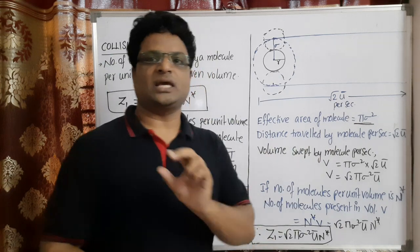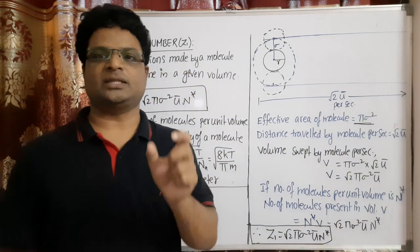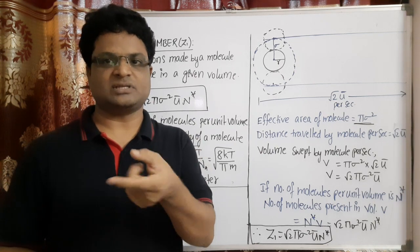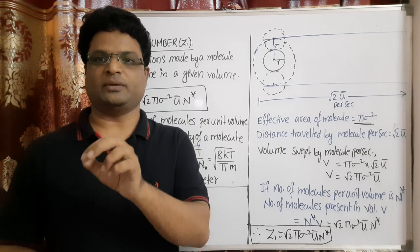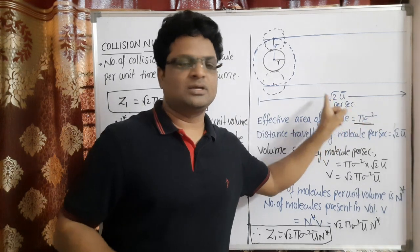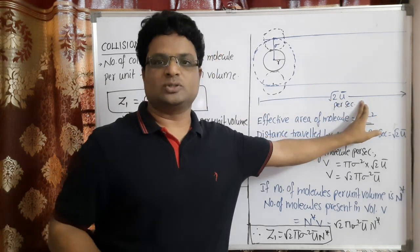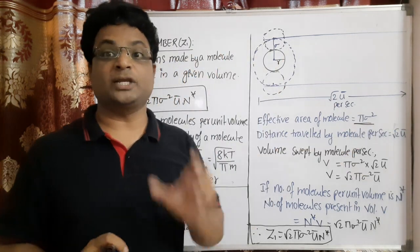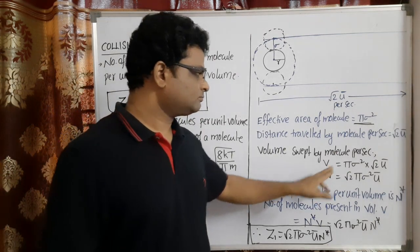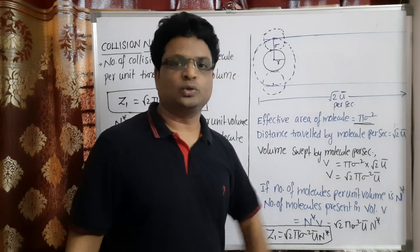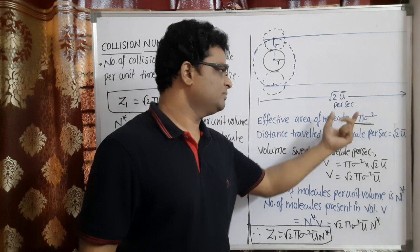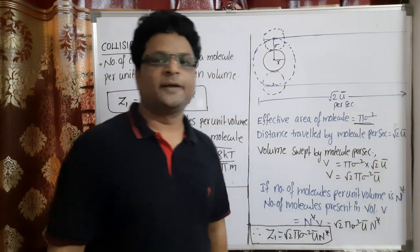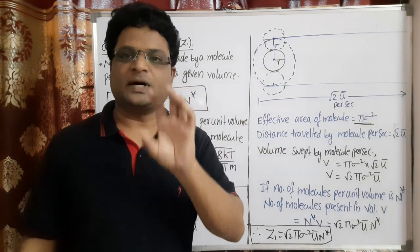Now, if √2 · U bar is the average velocity of a colliding molecule, the distance traveled by that molecule per unit time (per second) becomes √2 · U bar. The distance traveled by a molecule in unit time is its average velocity, which is √2 · U bar. The effective area covered by the gas molecule is π σ². So the total volume swept by the molecule per unit time is the product of these two: volume = π σ² × √2 · U bar = √2 π σ² U bar.